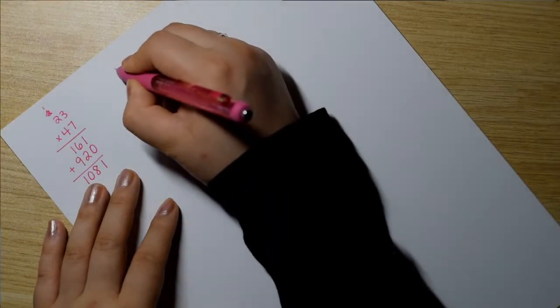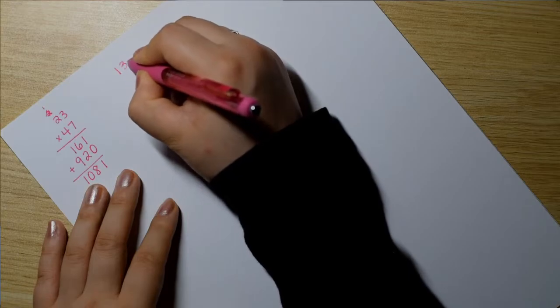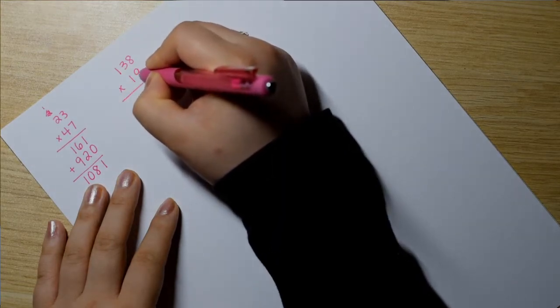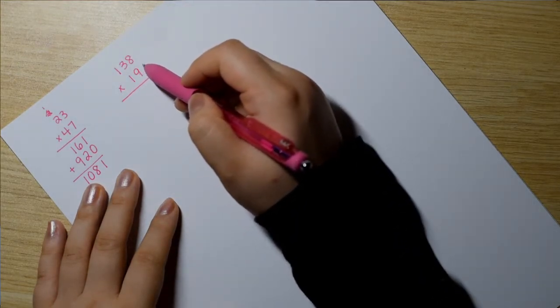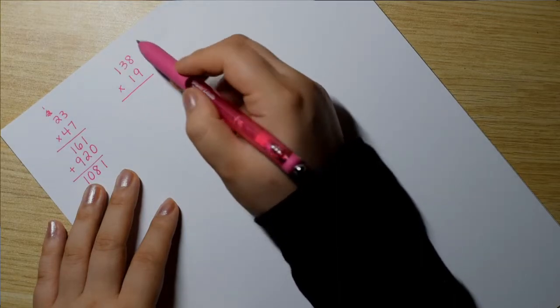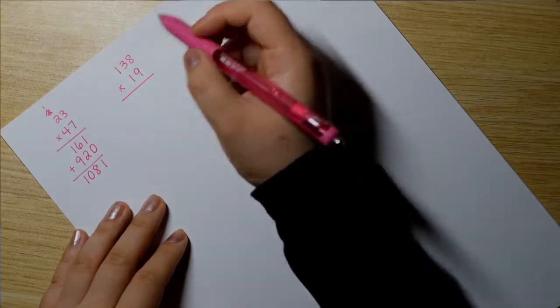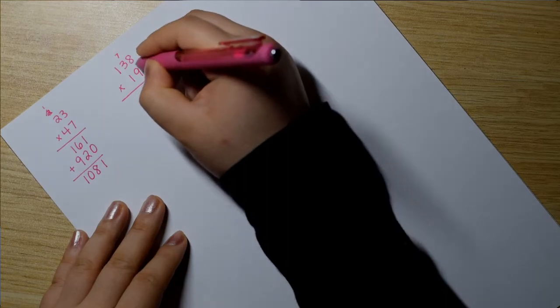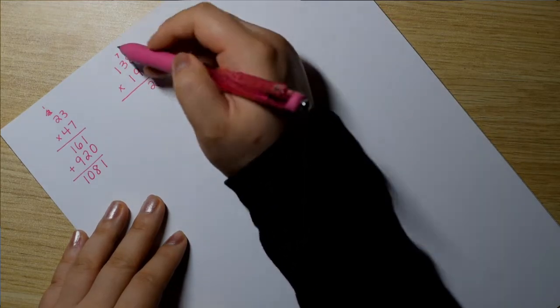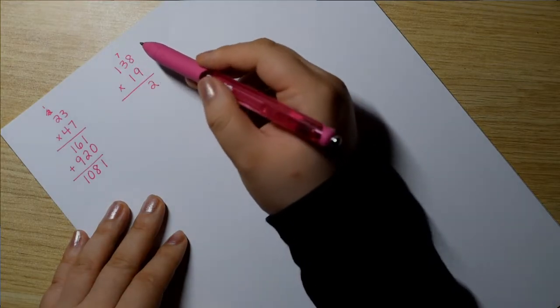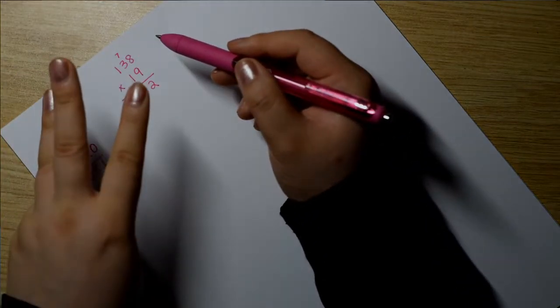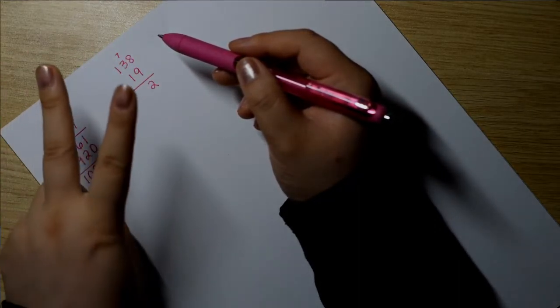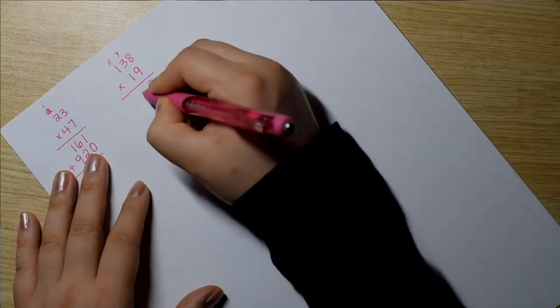So let's try 138 times 19. So before we do little tricks like maybe rounding the 19 up to a 20 and then minus 1 and that kind of stuff, it doesn't hurt to just know how to multiply it out. So 9 times 8, 72. 9 times 3, 27, and then we add 7. So if you're a finger counter, 28, 29, 30, 31, 32, 33, 34. All right, so 3 and then a 4 down. Nice.